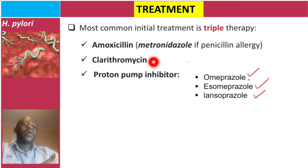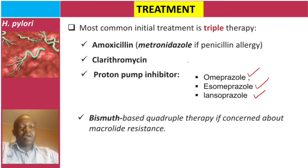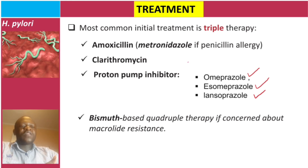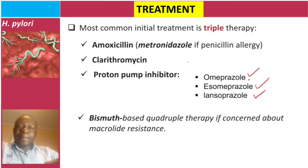In some cases, H. pylori can be resistant to clarithromycin. In that situation, bismuth-based compounds are added to make it quadruple therapy, which is used when macrolide resistance is a concern.